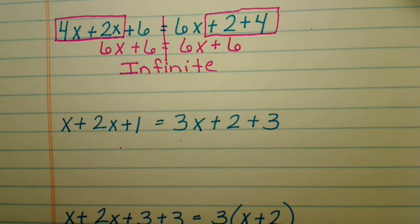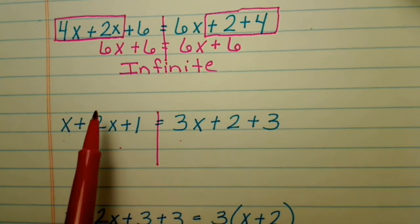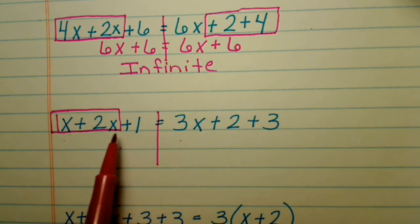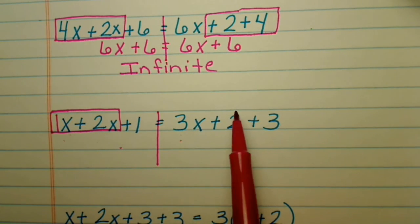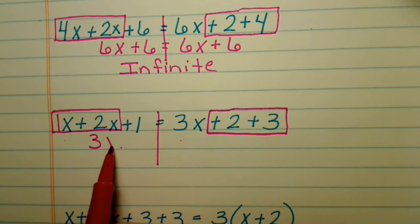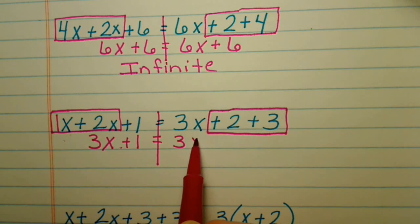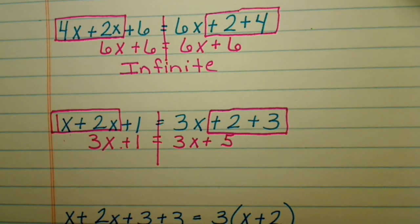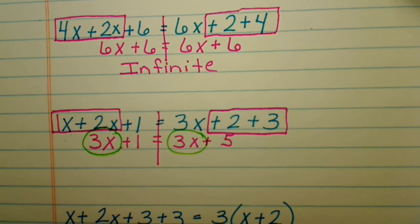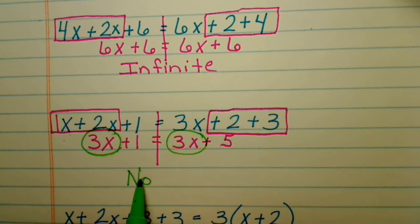Let's look at this one. Check for the distributive property — no, we can't. So combine like terms. On the left, combine the x terms, including the understood 1x. On the right, also look for like terms. That gives us 3x plus 1 equals 3x plus 5. We do have the same coefficient on both sides — but do we have the same constant? No. Therefore, we have no solution.